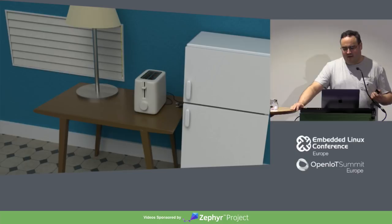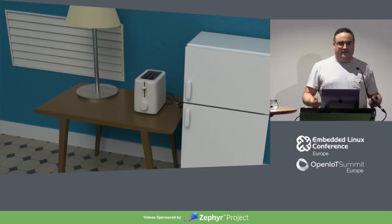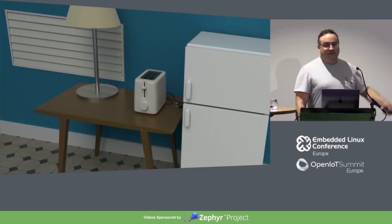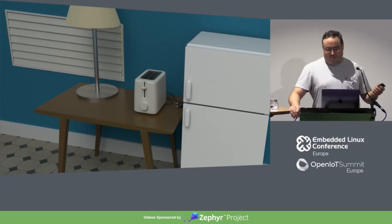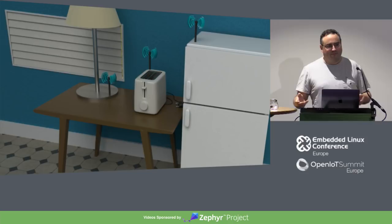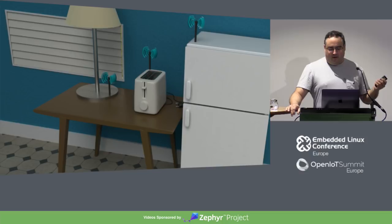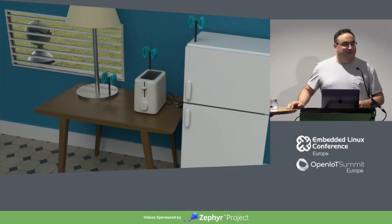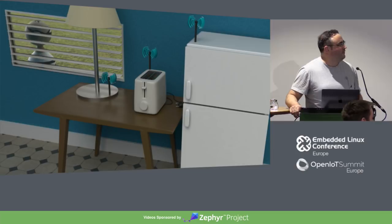Now let's break that down a little bit. We have a bunch of things — things I could find 3D models of on the internet easily. They may not be really typical things, but they're connected to the internet and they now have the ability or some reason to communicate with other devices over the network. What comes with that is much more opportunity for these devices to be used for nefarious purposes.